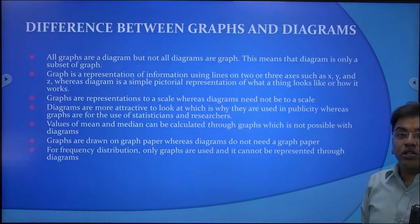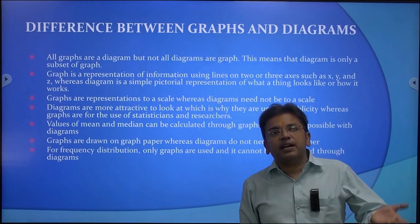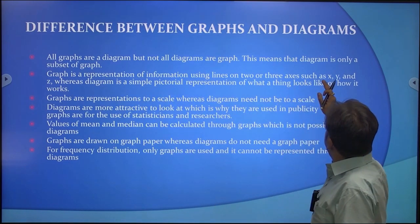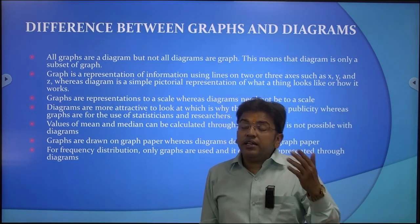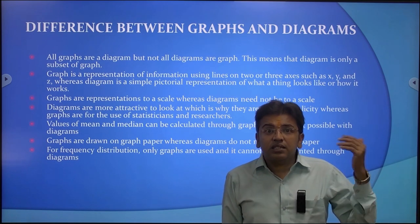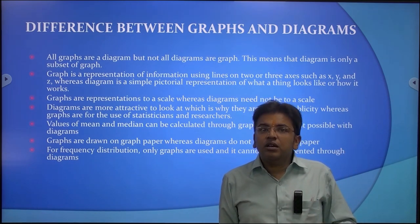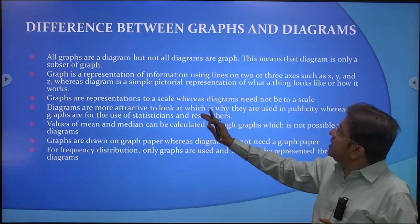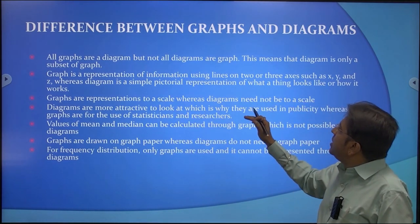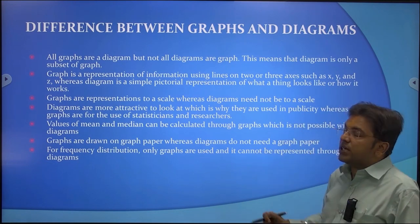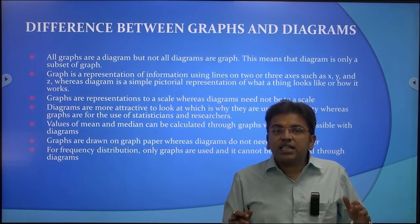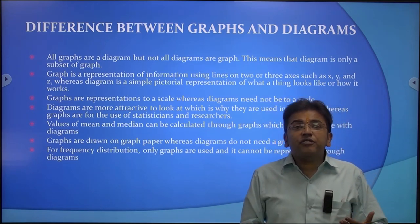Difference between graphs and diagrams: First, all graphs are diagrams, but not all diagrams are graphs — meaning diagram is a broader category. Whatever graphs exist are represented as diagrams, but all diagrams are not graphs because they cannot always be shown in x and y series. Second, a graph is a representation of information using lines on two or three axes such as x, y, and z, whereas a diagram is a simple pictorial representation of what a thing looks like or how it works. For a graph you require x, y, z series; for a diagram you do not.